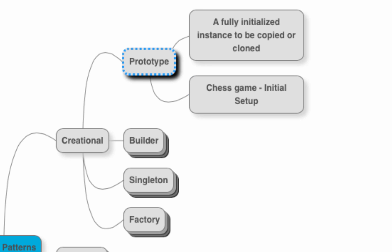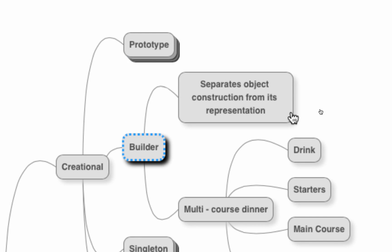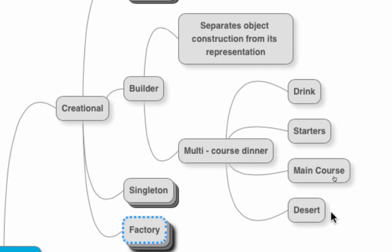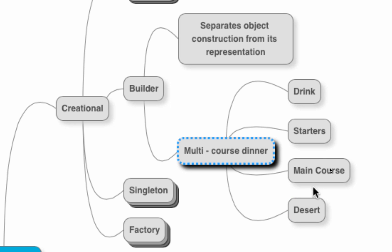Now let's move on to the builder pattern. The builder pattern is used when there is a complex object structure, such as in domain-driven design where we have composite structures of objects. For example, a multi-course dinner would contain a drink, starters, a main course, and a dessert — those are the different parts of the multi-course dinner class. Creating this class is complicated, so we try to separate object construction from its representation.